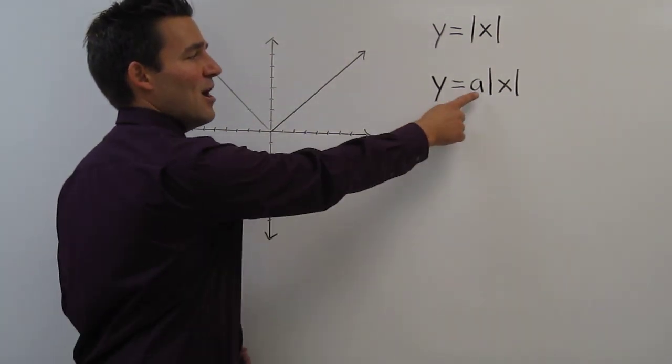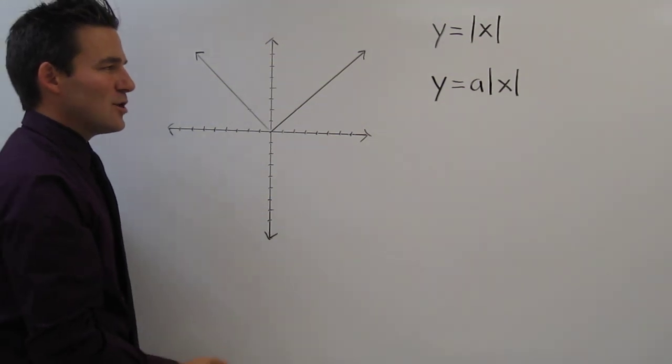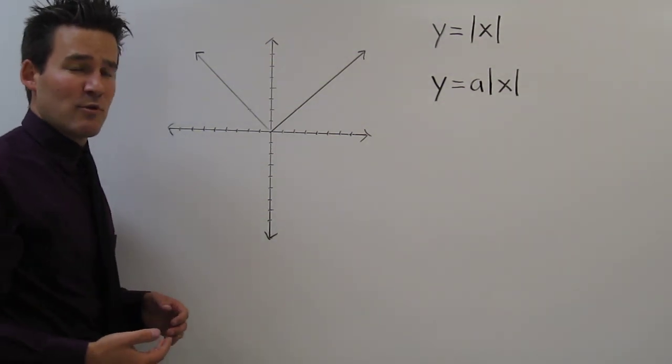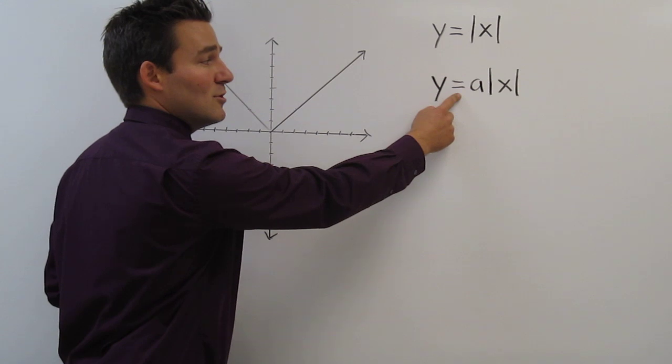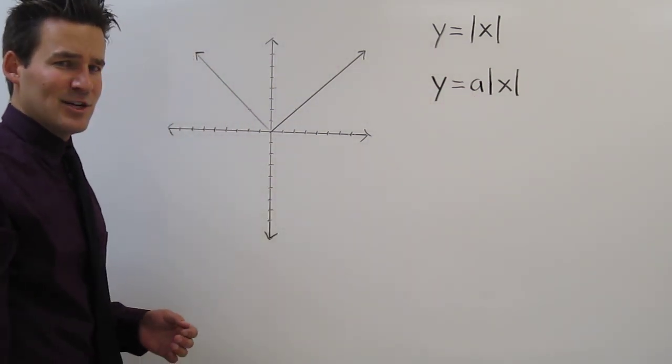How about if we had a constant a in front of the absolute value of x? So if we're approached with a situation where we have to graph y equals some constant times the absolute value of x, here's what we do.